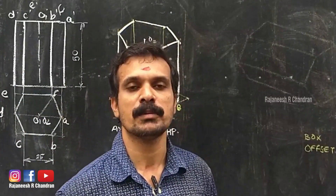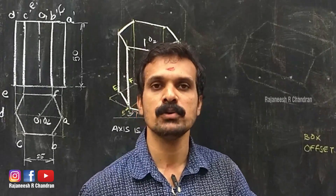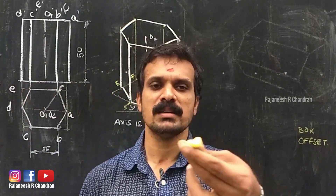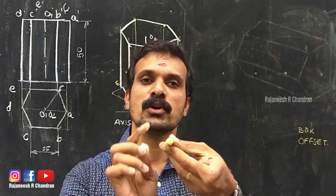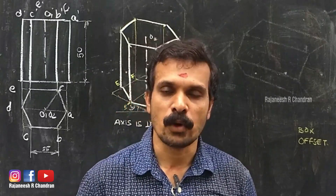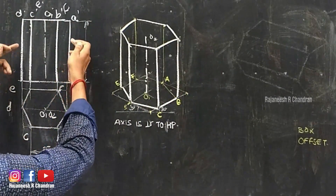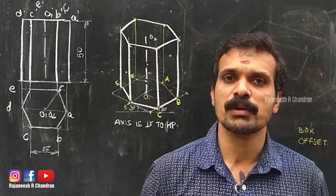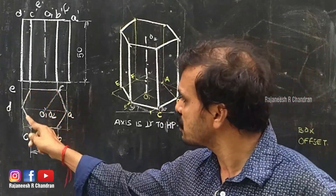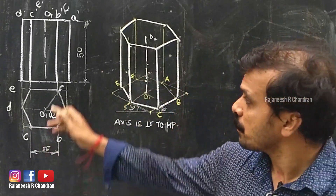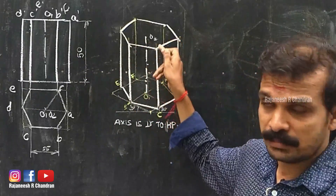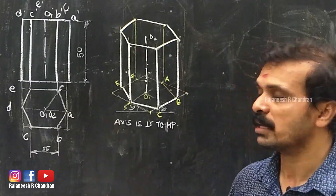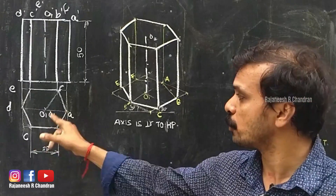Now we are going to construct the isometric projection or isometric view when the axis is parallel to HP. When the axis is parallel to HP, in the front view you can see the face or hexagon, and in the top view you can see the lateral axis. The purpose of drawing the orthographic projection is that without the top view, we cannot construct this isometric view. Without the front view we can construct it since we know the height, but without the top view we cannot — that is the purpose of drawing this orthographic projection.